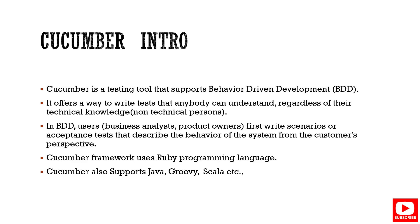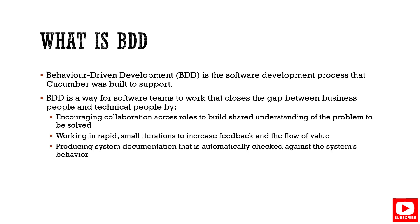Cucumber resolves that kind of situation. It collaborates all these people — coding people and non-technical people — where they both collaborate in BDD. That is a big advantage in Cucumber, and this is why it has spread widely across all IT sectors. All companies are using this BDD approach. The Cucumber framework runs on Ruby programming language but also supports Java, Ruby, Groovy, and Scala.